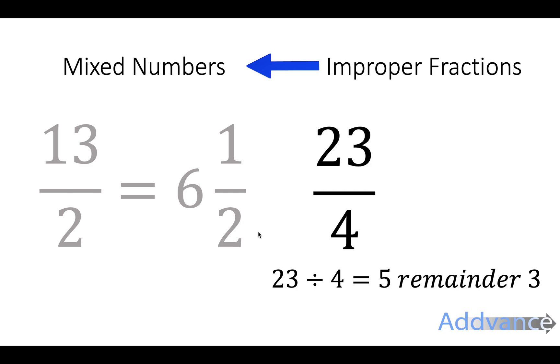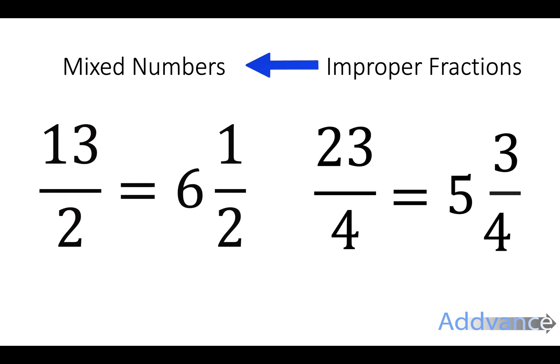Now we've got 23 over 4, 23 quarters. We do 23 divided by 4 is 5 remainder 3. So it looks like this: 5 and 3 quarters. The 4 on the bottom remains the same. And that's how you convert improper fractions to mixed numbers.